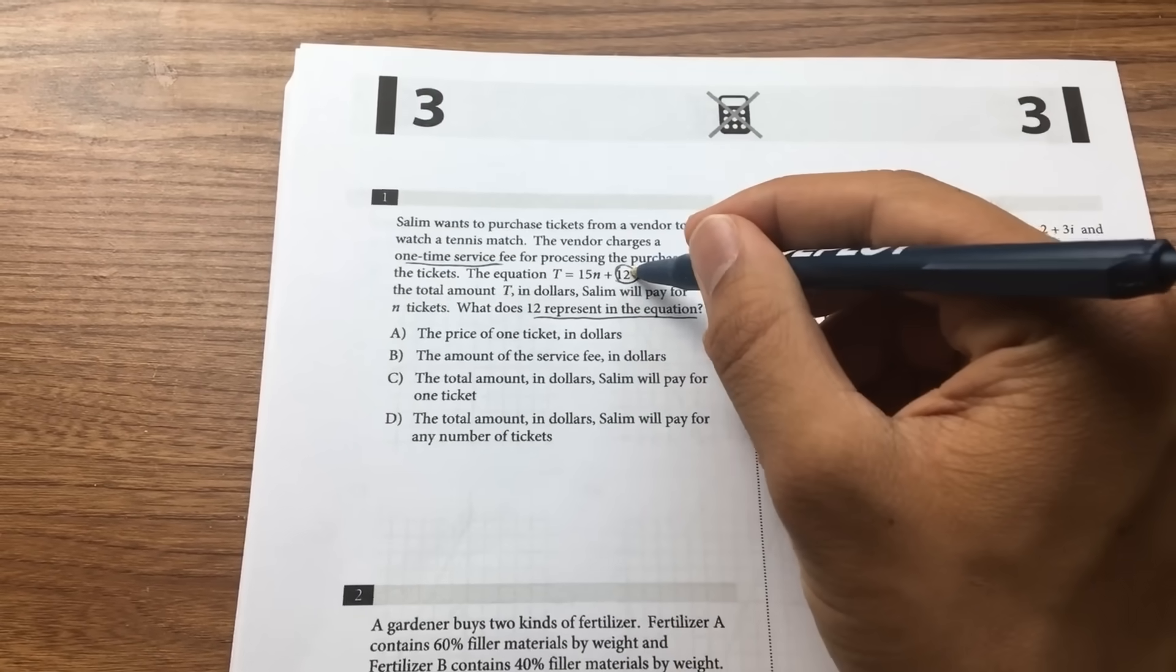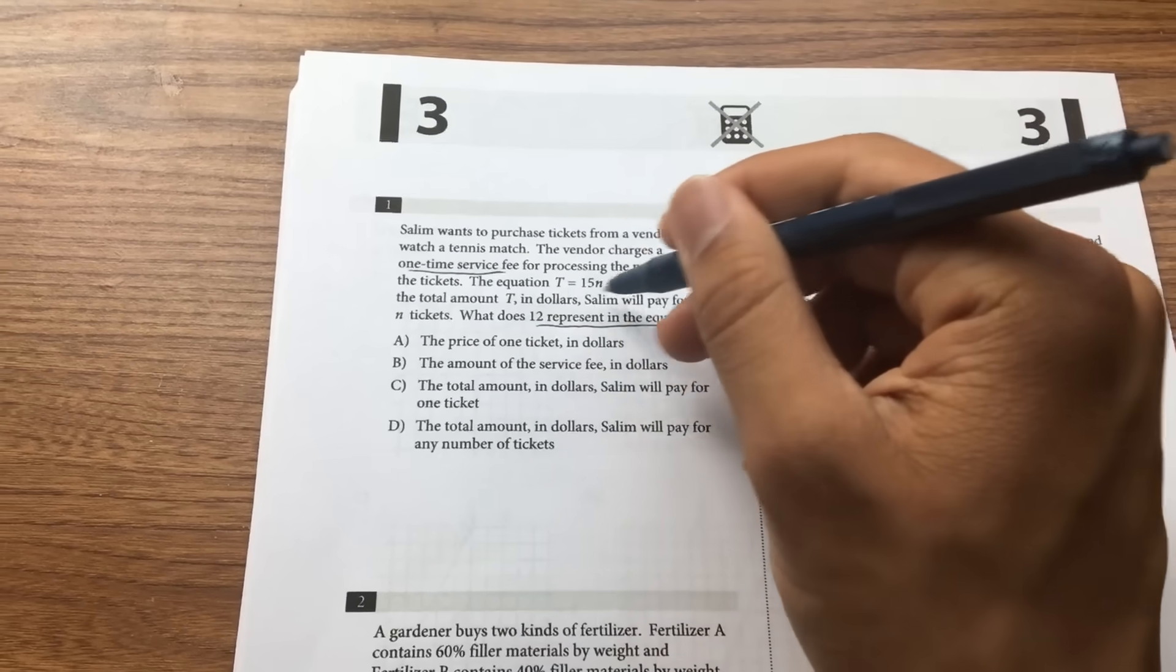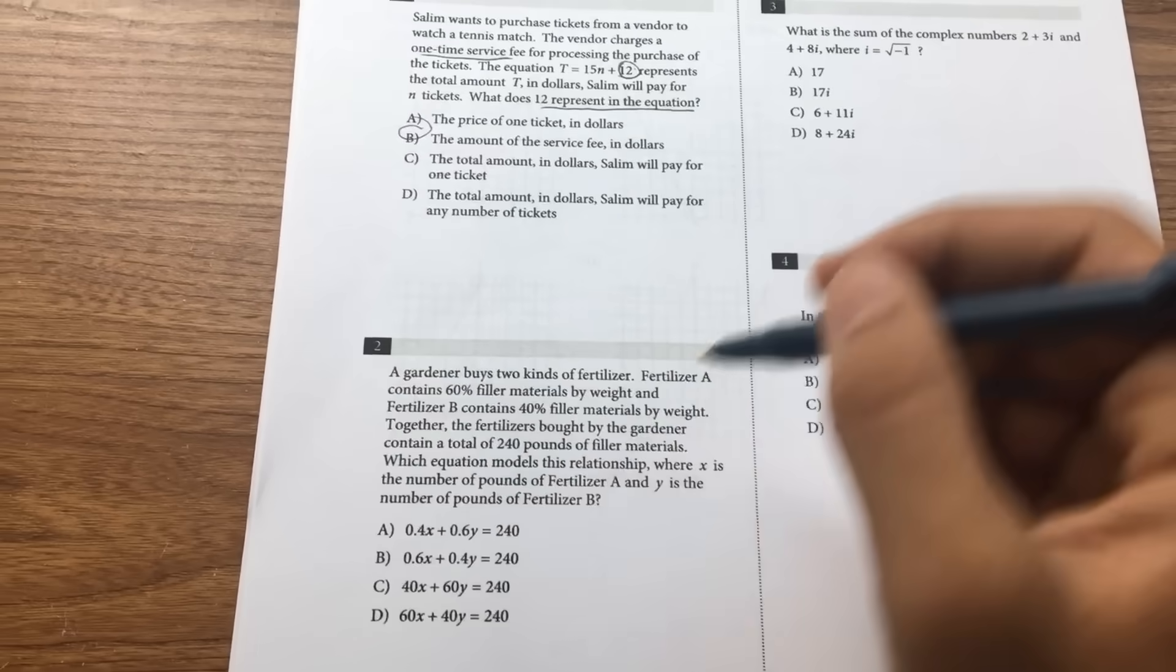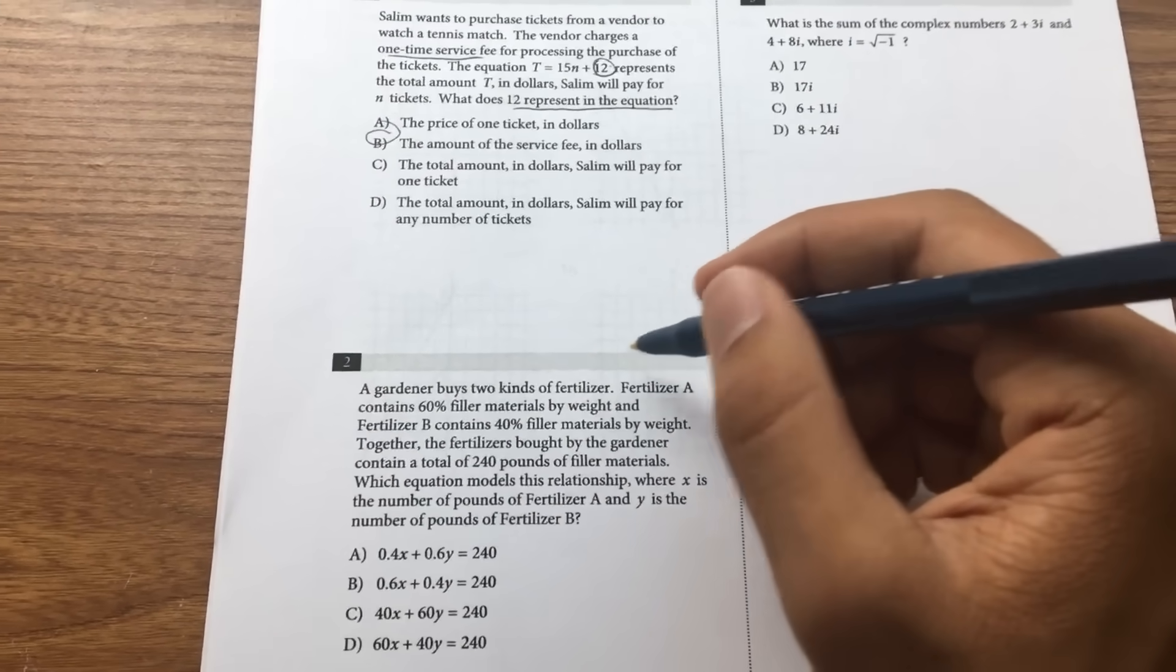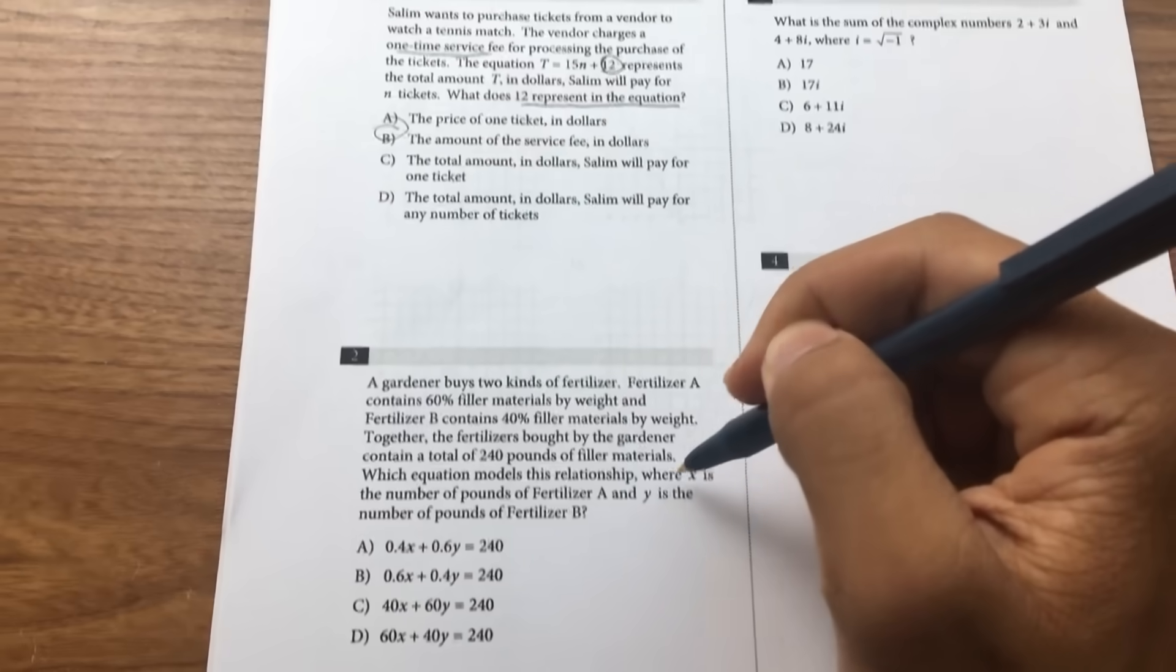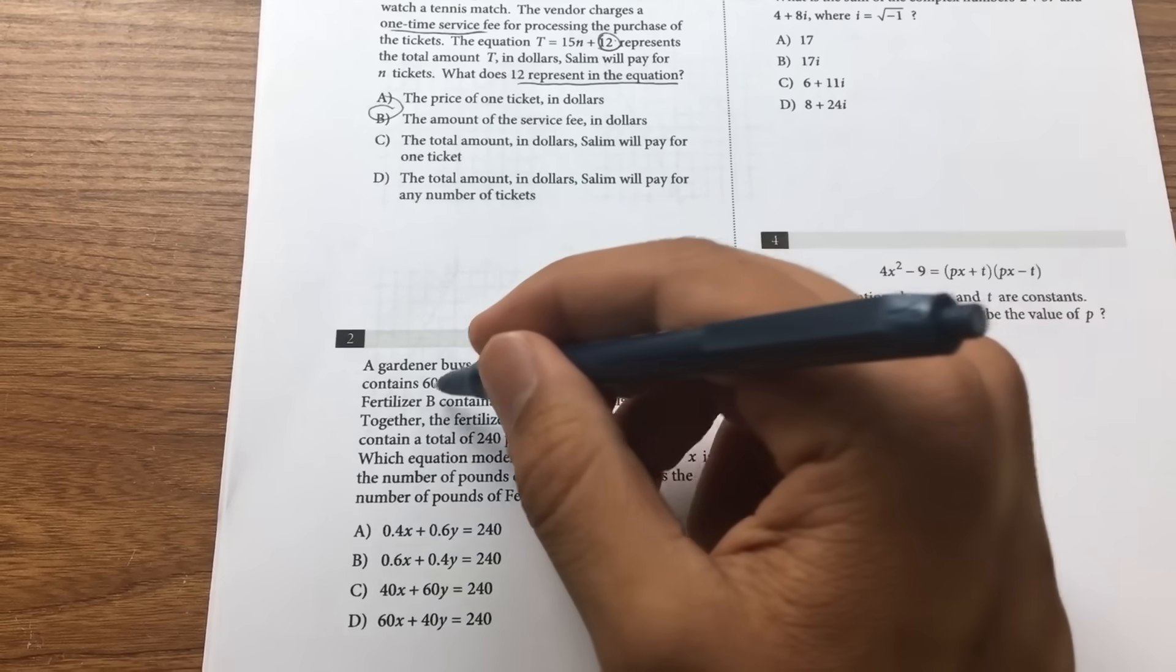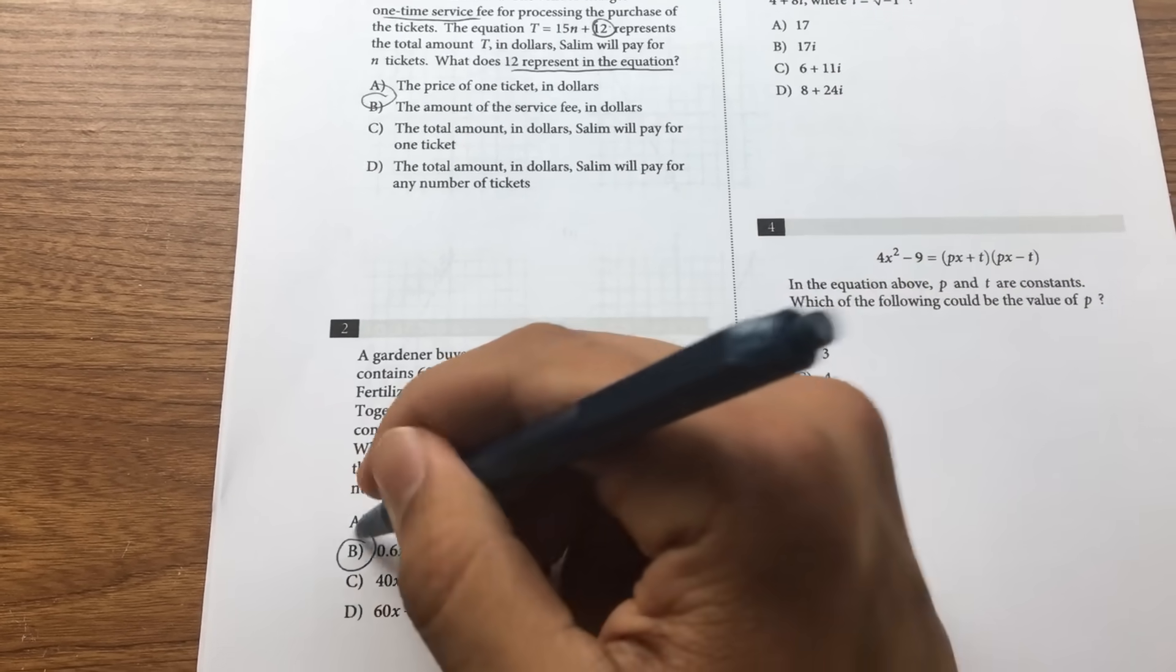Okay, so this is a y-intercept one-time service fee. It's asking what it represents B. For these problems you just want to find which variable matches which. Which percentage access fertilizer A? Fertilizer A is 60%, so right there none of the others makes sense.